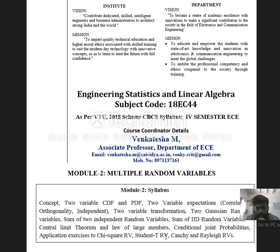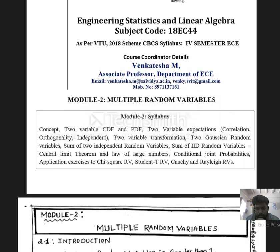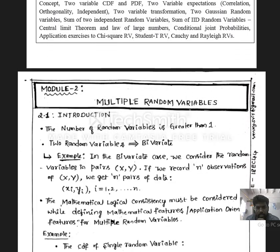Let us consider the first topic: the concept of multiple random variables. Here, multiple random variables refers to the number of random variables being greater than 1. If I consider two random variables, the data must be recorded in pairs, that is X, Y at any instant of time. Similarly, if I consider three variables, the data must be recorded in a three-dimensional plane, that is X, Y, Z. Most of the topics in this module are limited to bivariate random variables, that is two random variables.